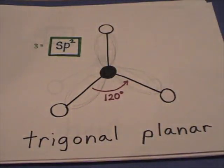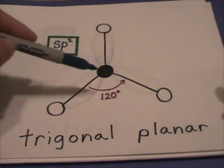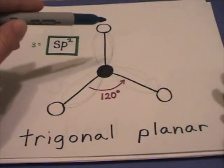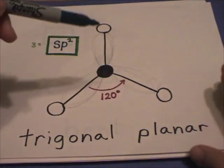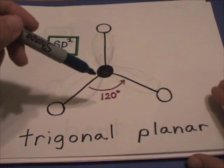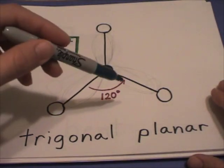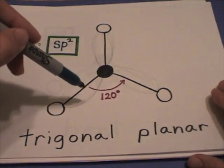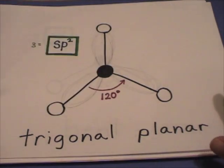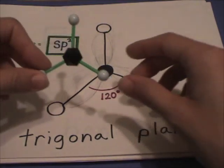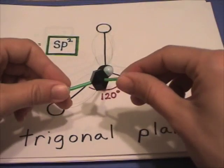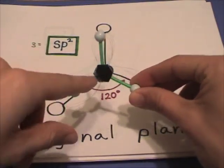Whenever I talk about electron regions getting as far away as possible — three sigma bonds getting as far away as possible will form 120 degree bond angles. The hybridization is sp2.